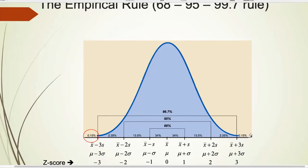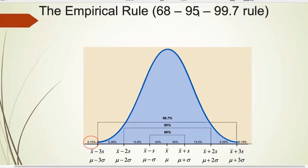When can you use the empirical rule? You can only use it if the data follows a bell curve — meaning the distribution must be normal. If it doesn't follow a normal distribution, you cannot use the empirical rule.